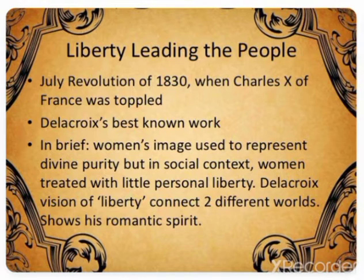The Parisians violently protested against the abuses of their individual rights. They took hold of the city and violent fighting ensued, resulting in a high death toll. Charles X eventually abdicated and a constitutional monarchy called the July Monarchy was established with Louis Philippe I as King of France.